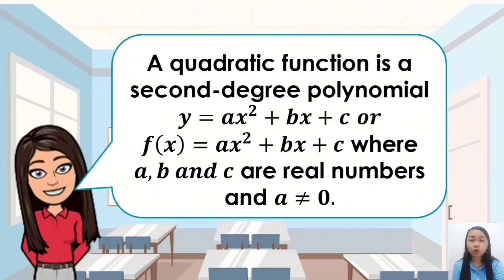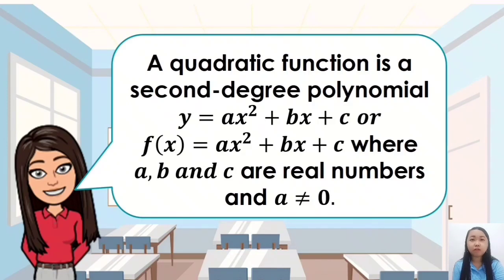In other words, a quadratic function is a second-degree polynomial: y is equal to ax squared plus bx plus c, or f of x is equal to ax squared plus bx plus c, where a, b, and c are real numbers and a must not be equal to 0. Why is that a must not be equal to 0?